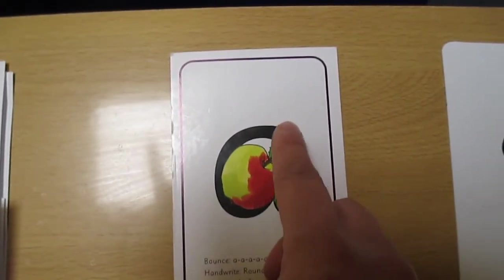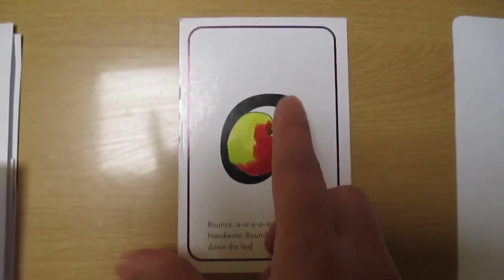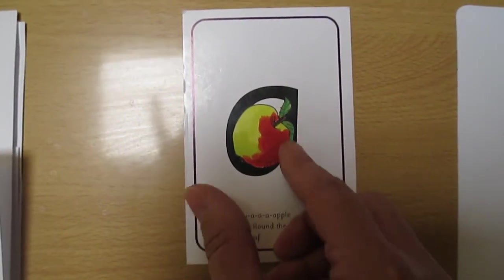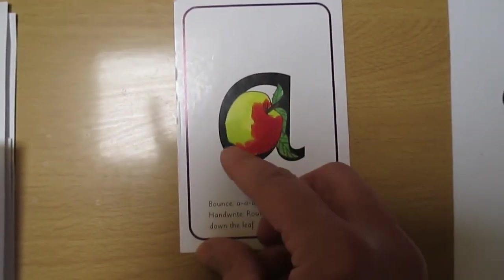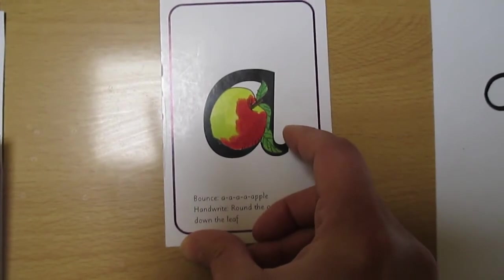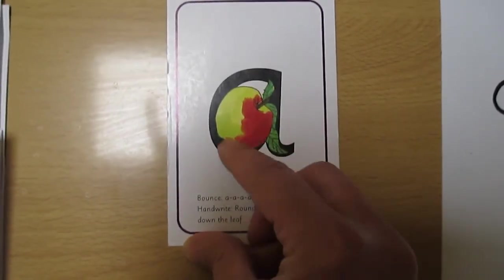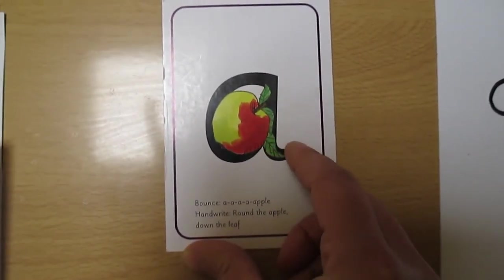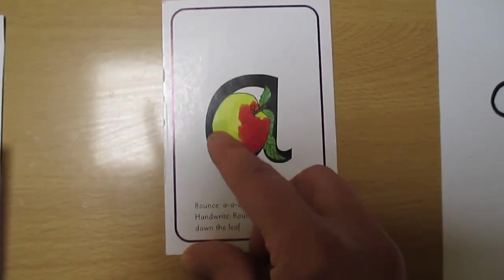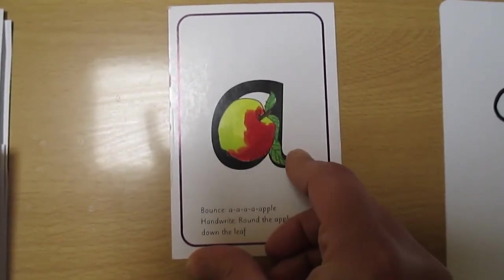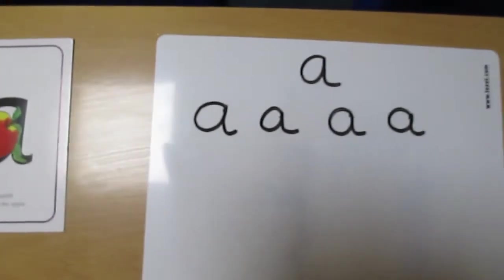Round the apple and down the leaf. Round the apple and down the leaf. Last time. Round the apple and down the leaf.